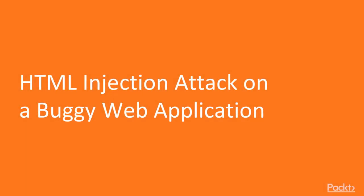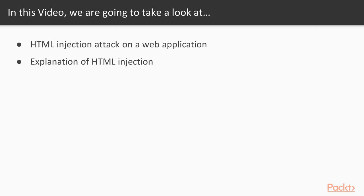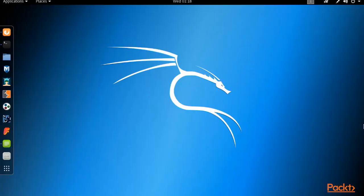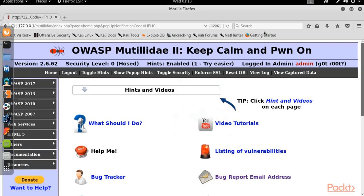In this video, we will learn about HTML injection attacks on web applications, and I will show you how to perform an HTML injection attack on a buggy web application. The lab setup uses Mutillidae, available in Kali Linux, and we are going to perform HTML injection inside Mutillidae. Please open your Kali Linux operating system and open Mutillidae — I have already opened it inside my browser.